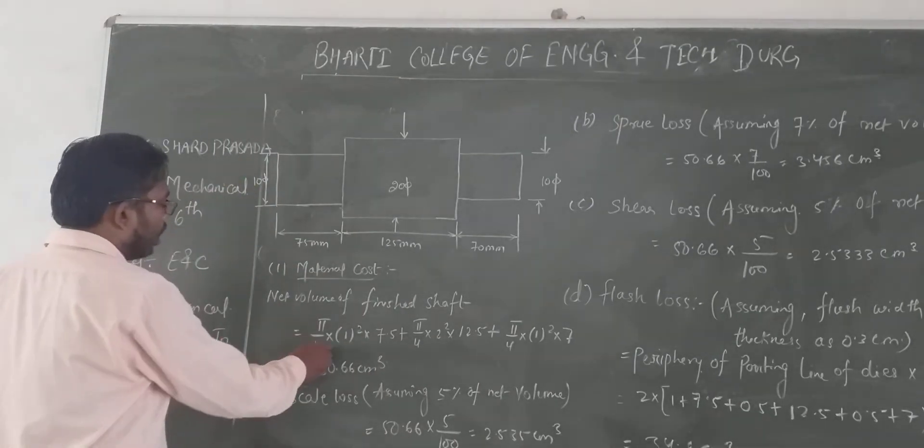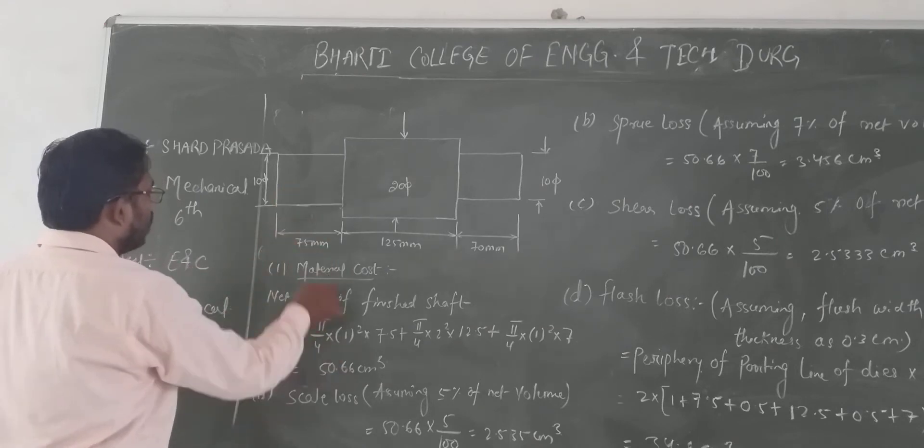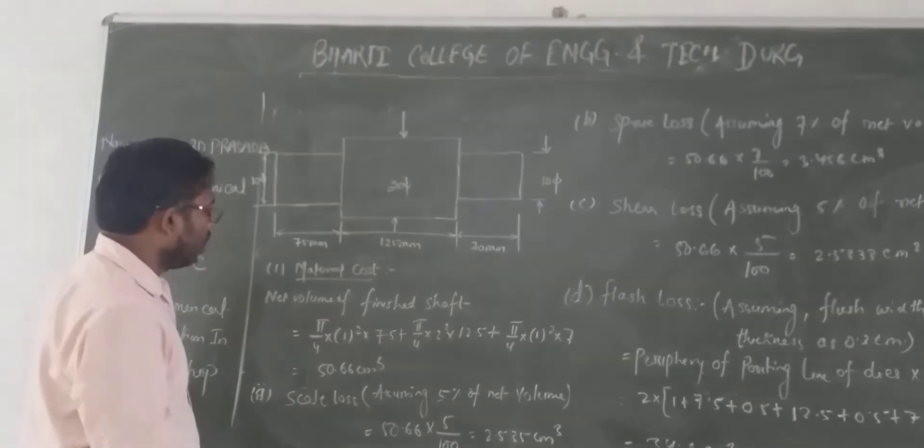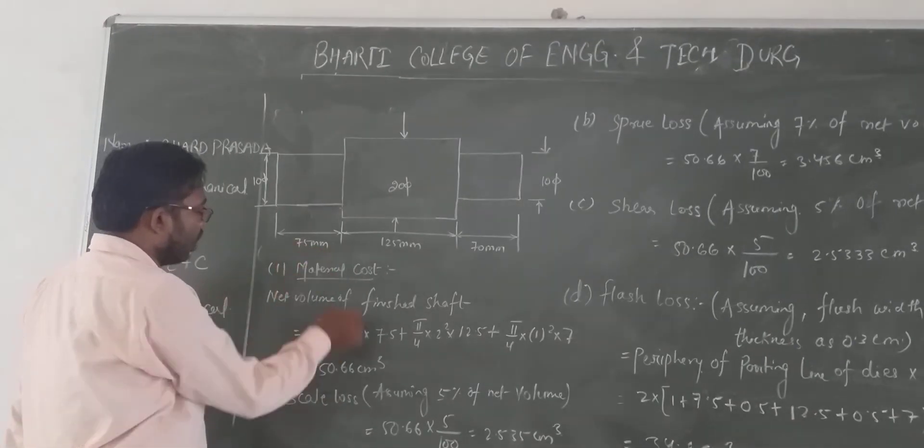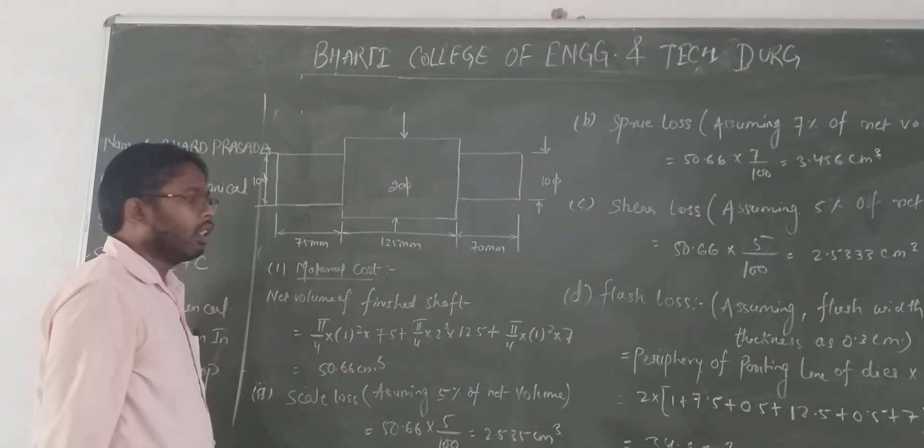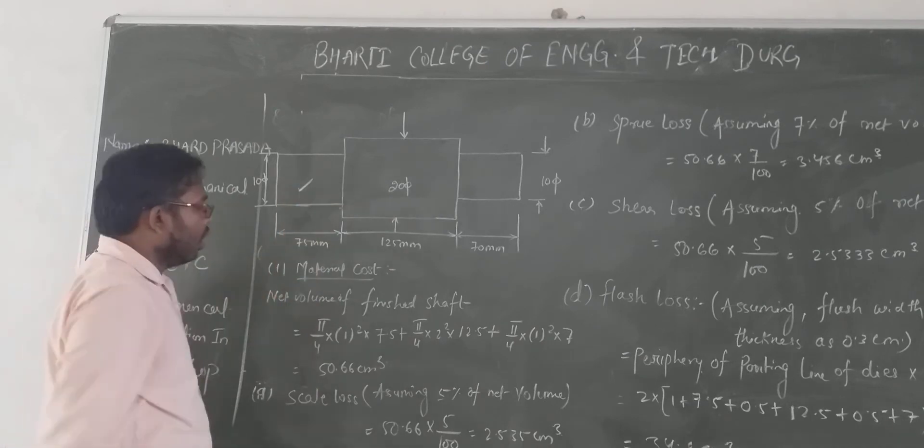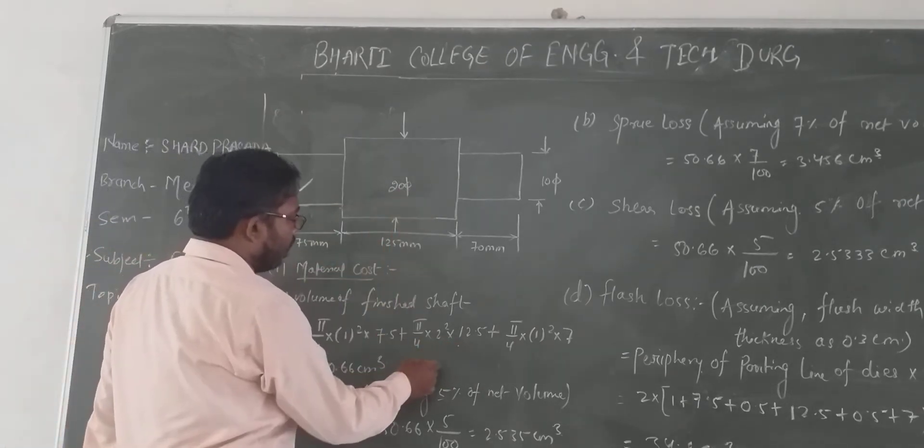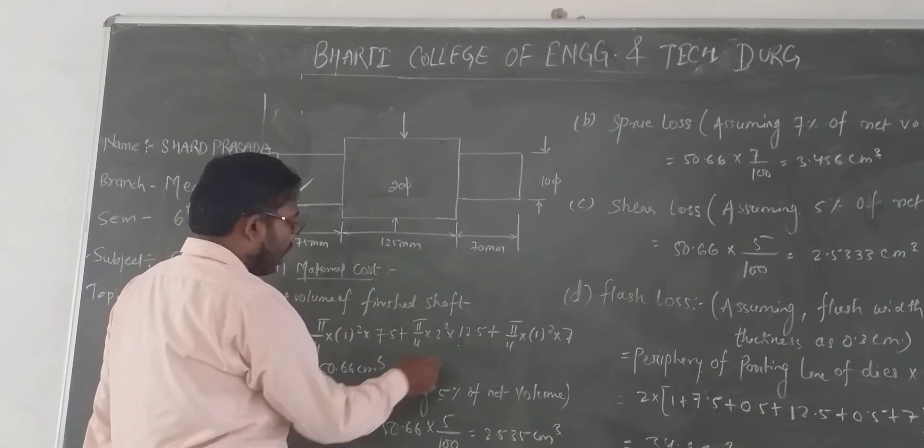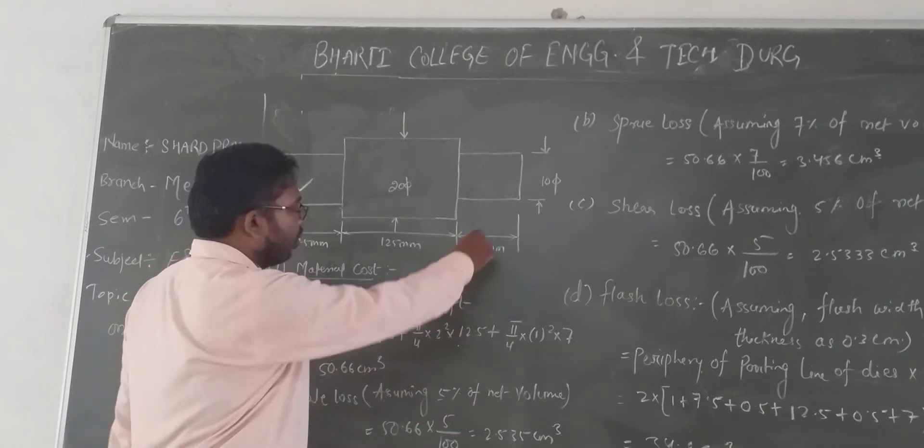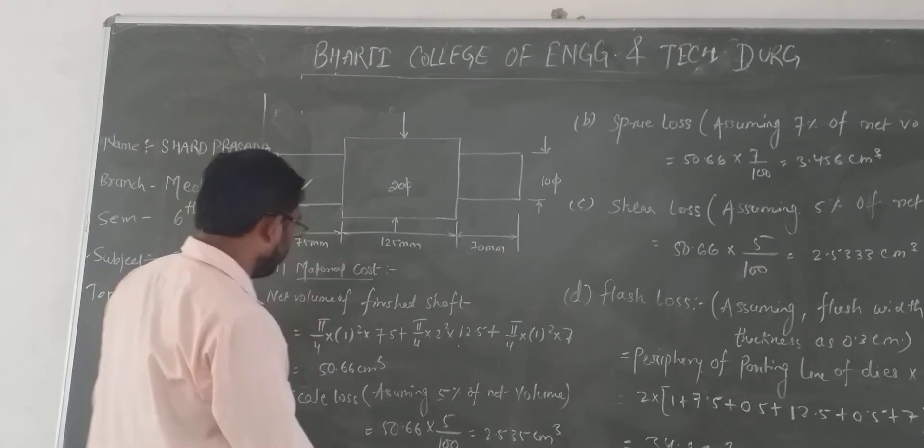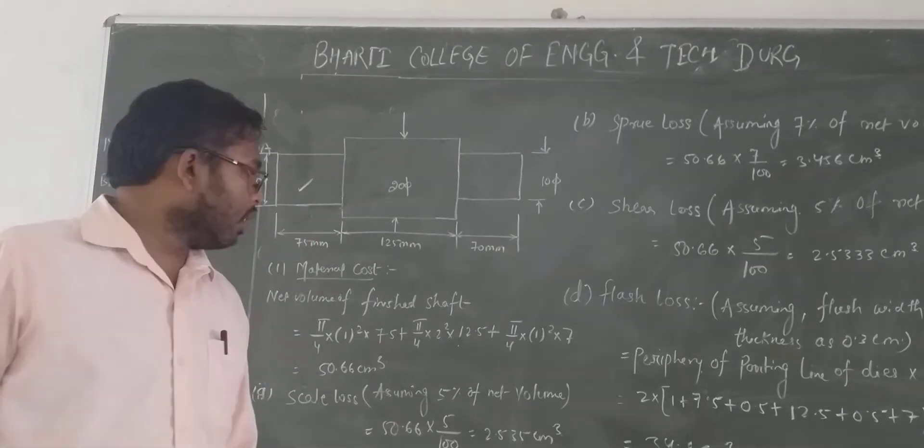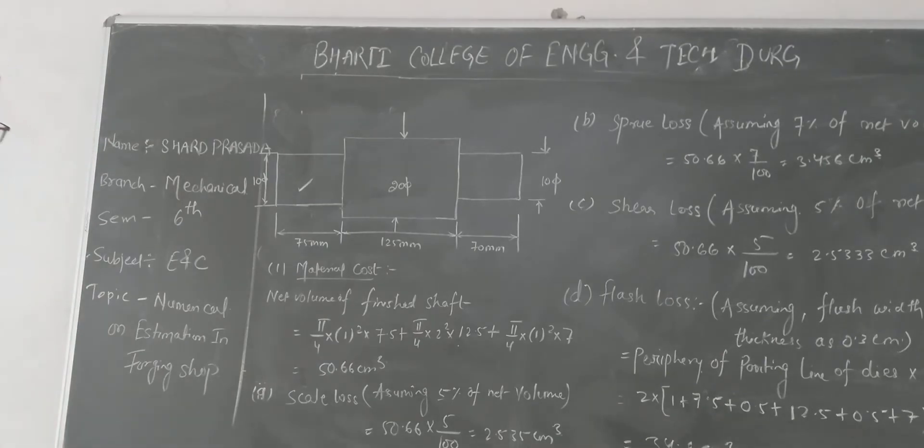So volume is π/4, d equals 10 centimeters. If we change it, 7.5, π/4 × 2² × 5.5 plus π/4 × 1² × 7. This equals 50.66 cm³ total volume.